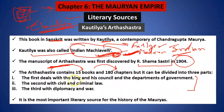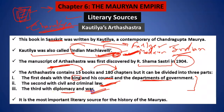If we divide the Arthashastra into three parts: the first part deals with the king, his council of ministers, and the departments of the government. The second part deals with civil and criminal law — that means related to law, order, and the judiciary. The third is related to foreign policy, that is diplomacy and war. First is related to governance, second to law and order and judiciary, and third to foreign policy.